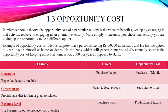In CS economics today we have to discuss opportunity cost. In easy words, opportunity cost is the cost of choice — the next best alternative forgone. In microeconomic theory, the opportunity cost of a particular activity is the value or benefit given up by engaging in that activity relative to engaging in the alternative. If you have two options, product A and product B, and you select product B, then product A would be your opportunity cost.